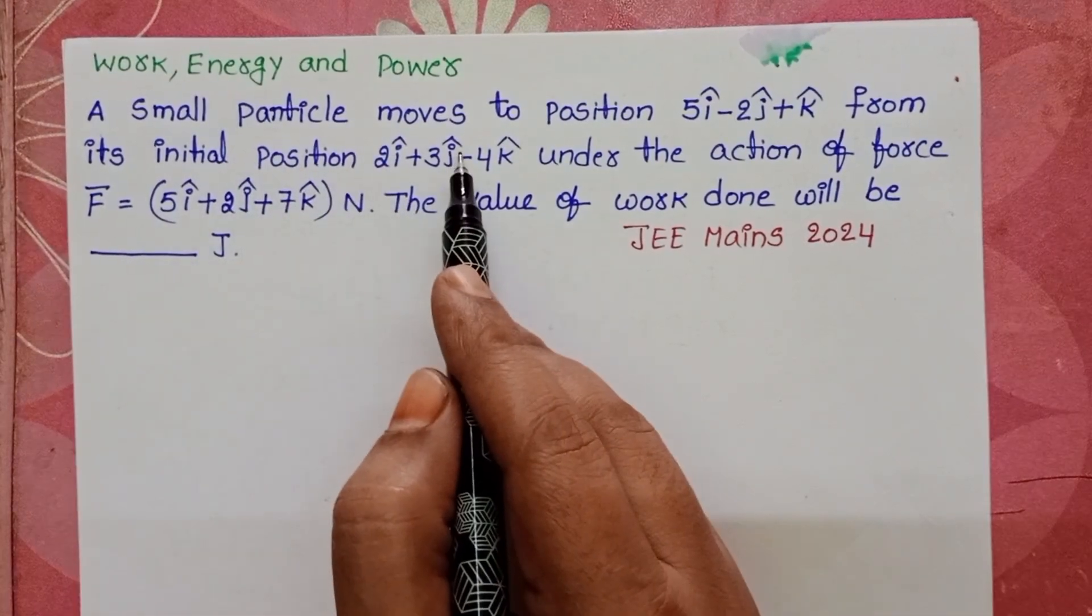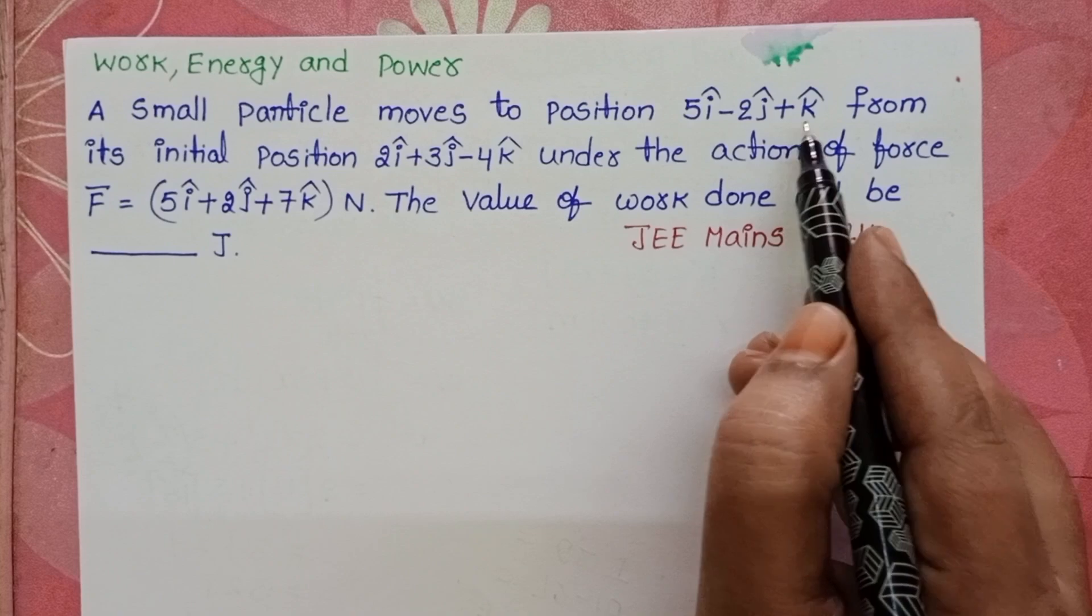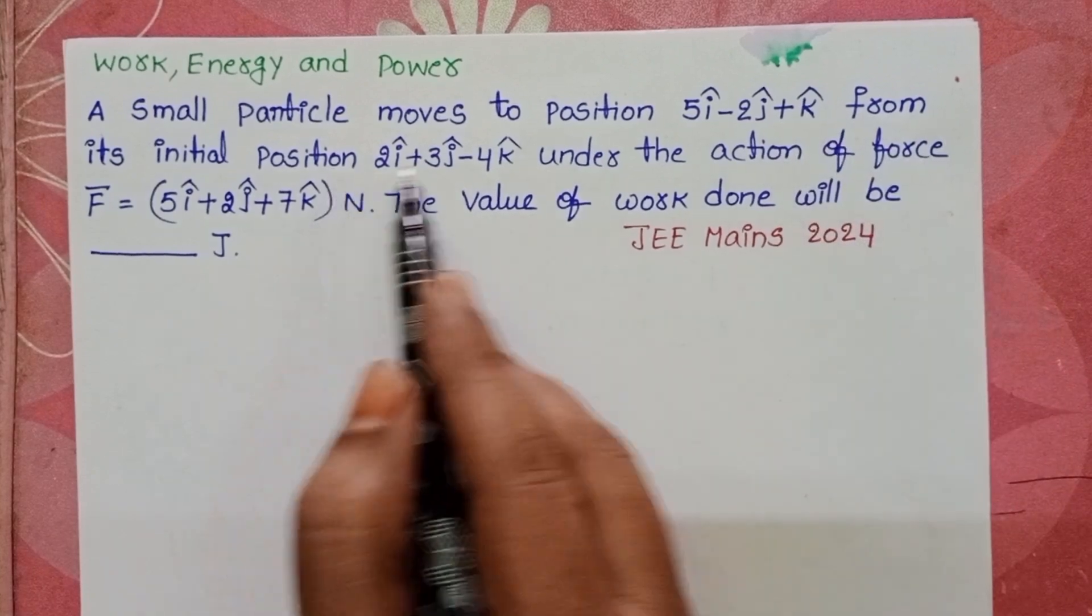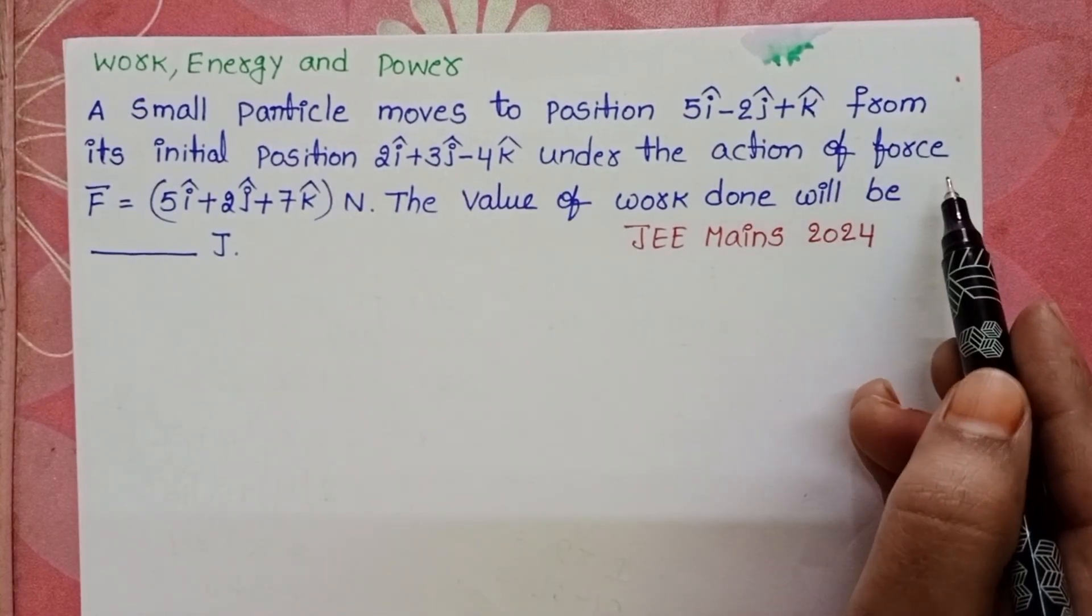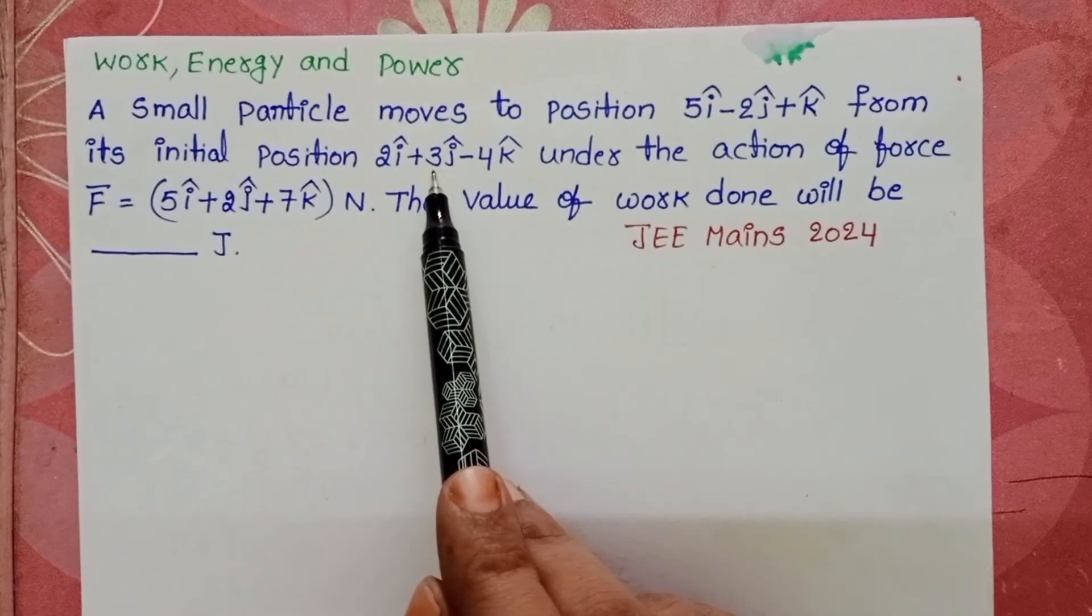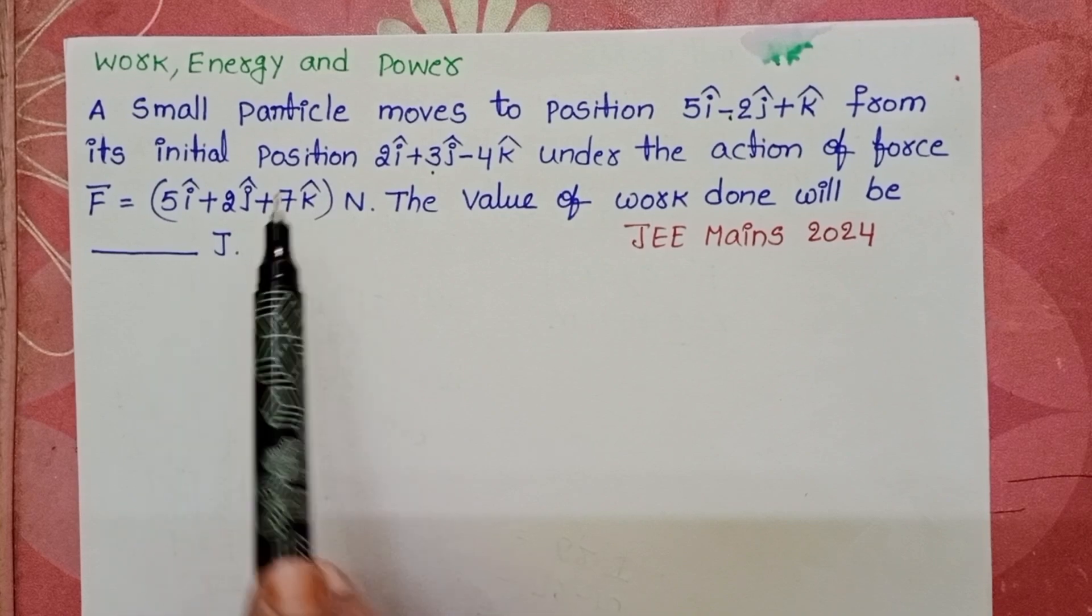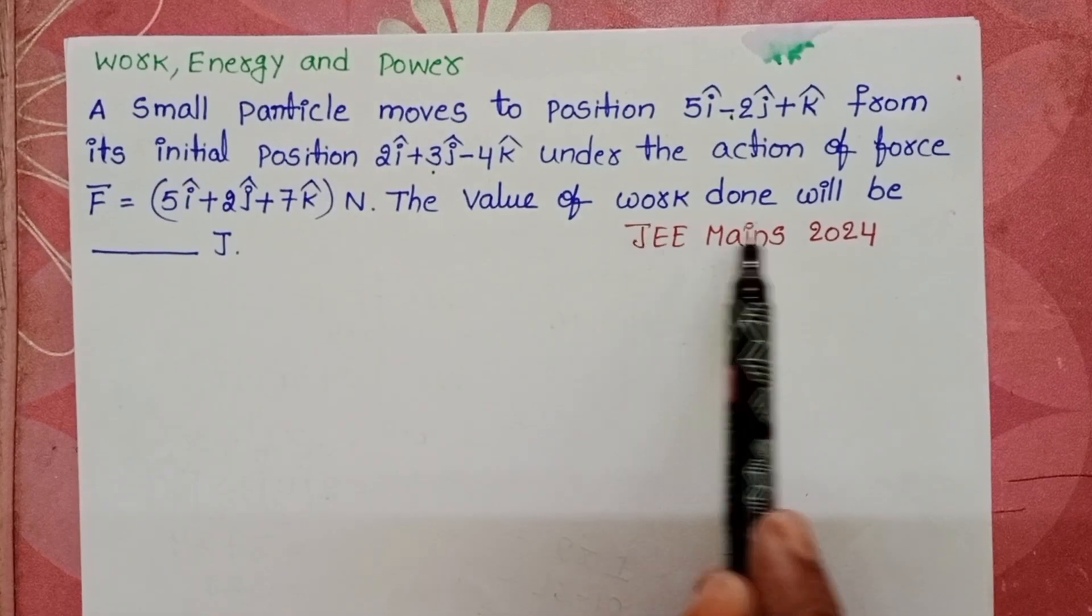A small particle moves to position 5i cap minus 2j cap plus k cap from its initial position under the action of the force. Here a particle is moving from its initial position to final position due to the application of the force. By using this we have to find out the work done.